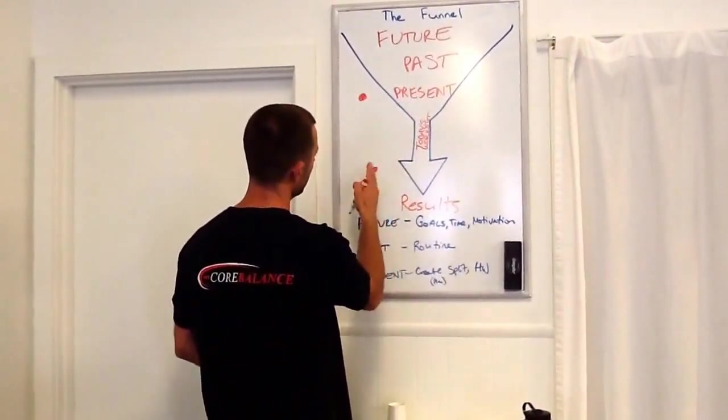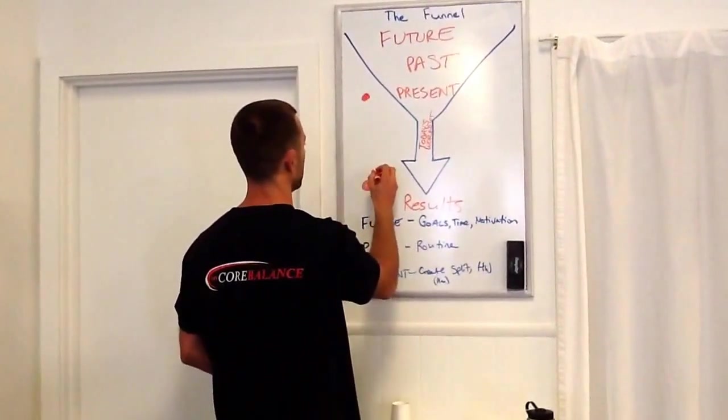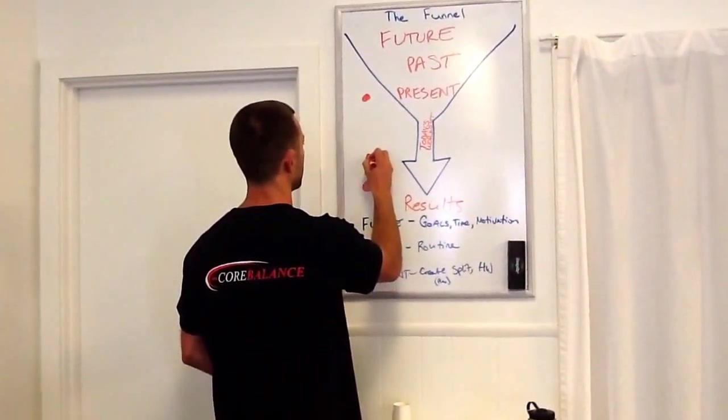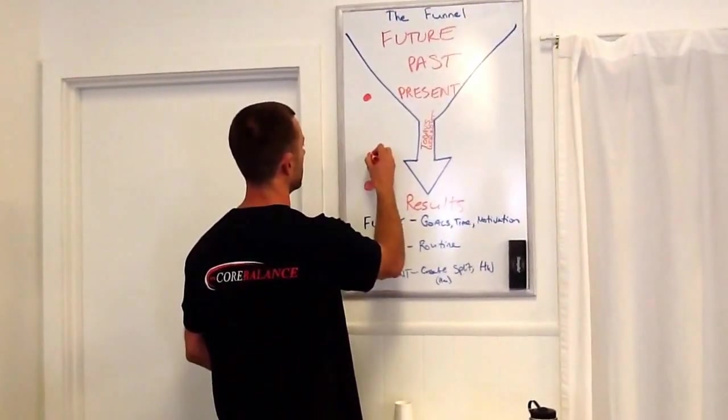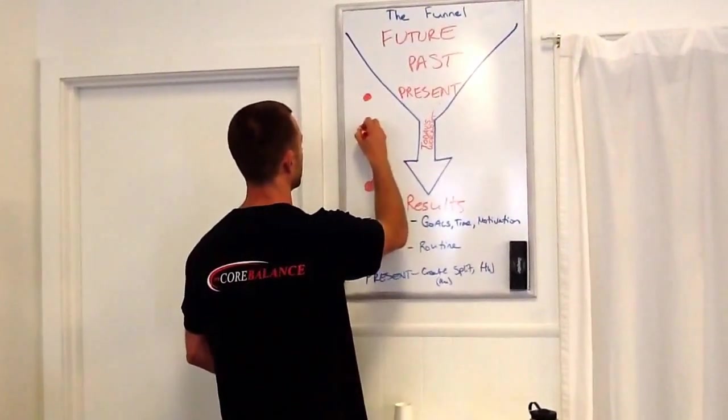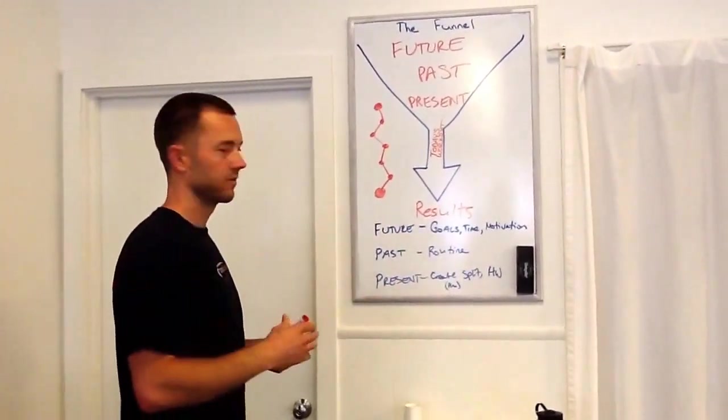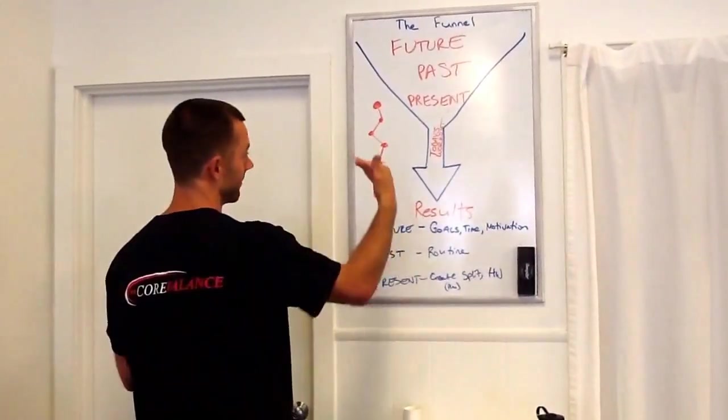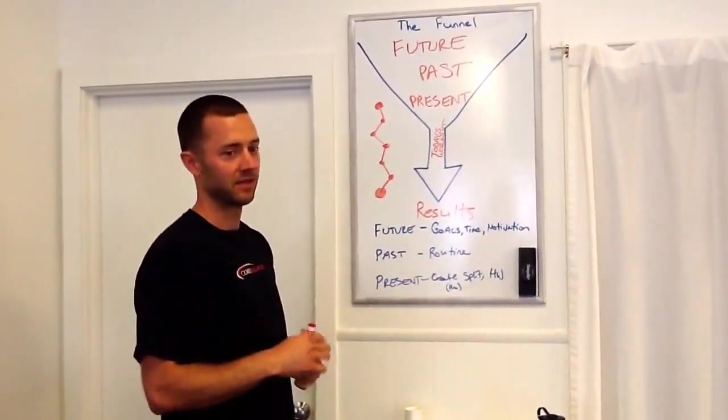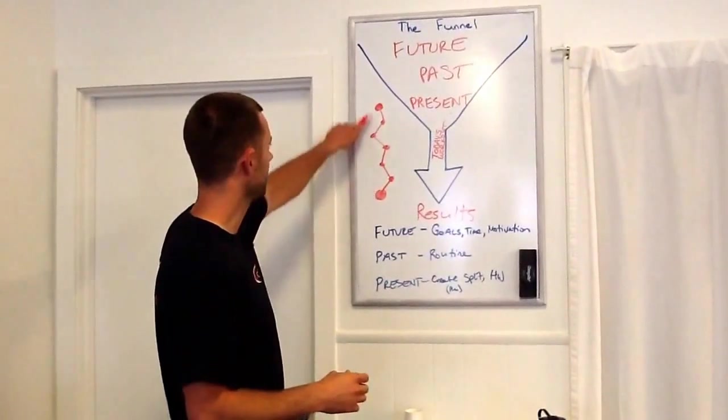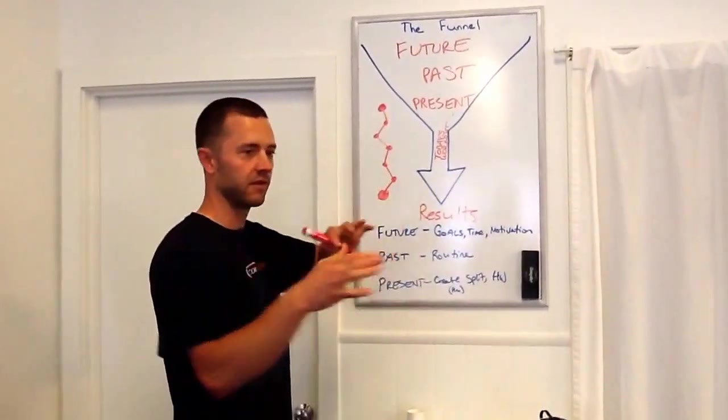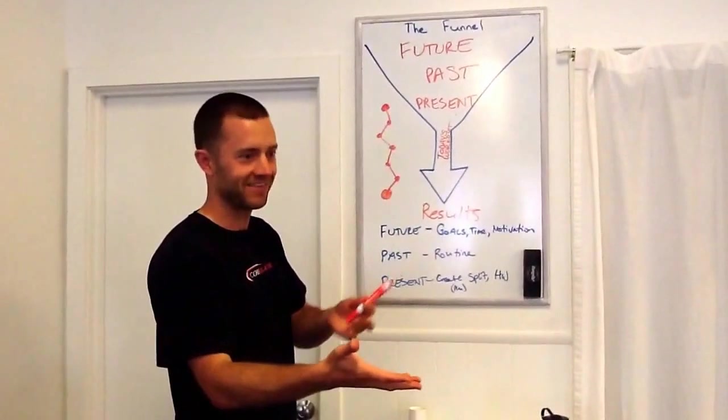And then you reassess from here. You go, oh, we're going a little bit off. But we're still going kind of that direction. Okay, let's go a little more here. After another month, you reassess. Okay, let's go there. And it looks something like that. So a straight line directly to the goal is very unlikely. Because from here, it's hard to see that. It's hard to see all the different obstacles that come up, depending on the distance.